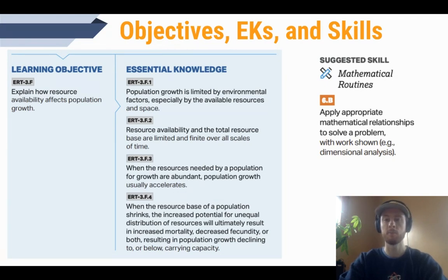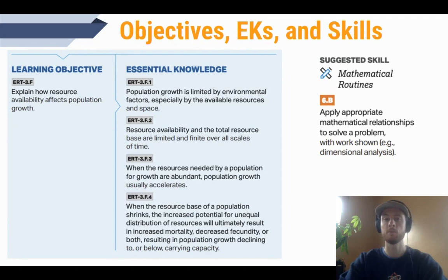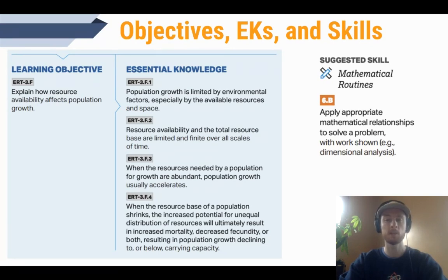We'll look at an example with paramecium and their food resources increasing. The fourth essential knowledge point is the opposite: when limiting resources are decreased, there will be a decrease in individuals' ability to survive and reproduce, so the population will drop back below carrying capacity. Our suggested skill to practice today will be a math skill — applying mathematical relationships to solving a problem — and we'll practice that at the end of the video.